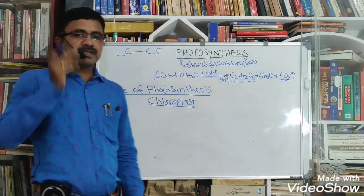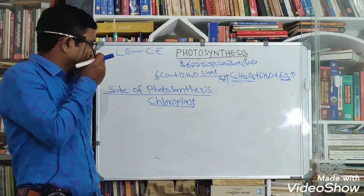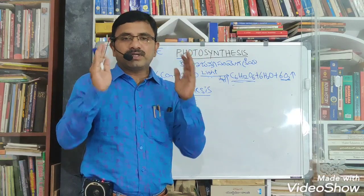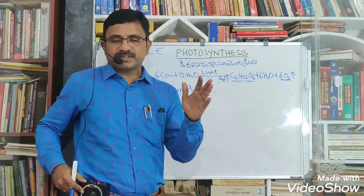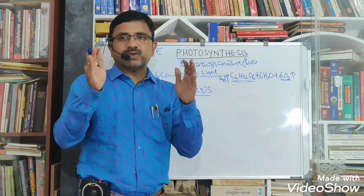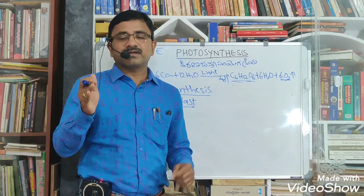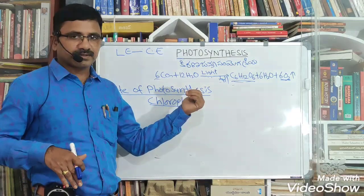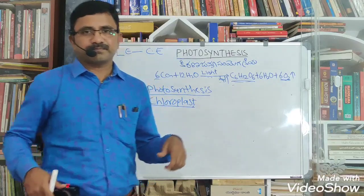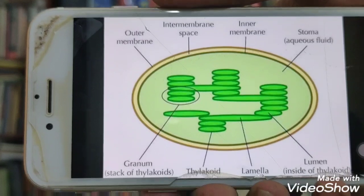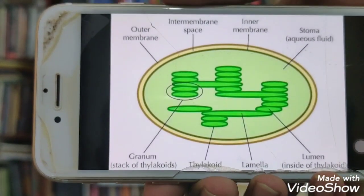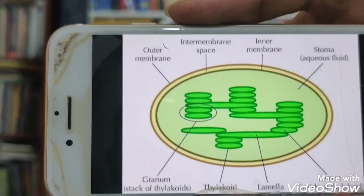Next, the site of photosynthesis — the site of photosynthesis is the chloroplast. Chloroplast is the site of photosynthesis. Only green plants perform photosynthesis. In green plants, the organelle known as chloroplast is the site for photosynthesis. Chloroplast is found abundantly in mesophyll cells of the leaf.